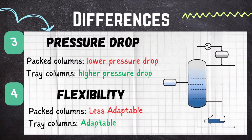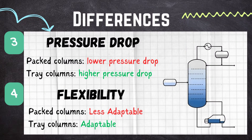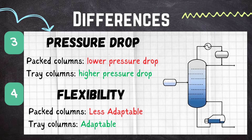The third difference is pressure drop. The packed column has a lower pressure drop compared to tray columns, while tray columns generally have a higher pressure drop. The next parameter is flexibility — packed columns are more adaptable to changes in process conditions, while tray columns may be less adaptable to changes in process conditions compared to packed columns.